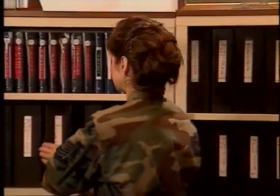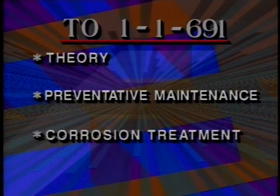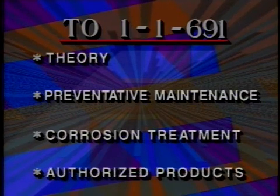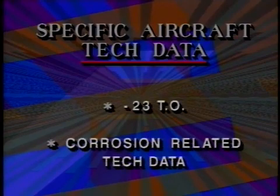If we identify a corrosion problem, how do we find out what the limits are on the damage? Let's start by looking in the applicable tech data. TO 1-1-691 covers general aircraft corrosion, including theory, preventative maintenance, corrosion treatment, and authorized cleaners and solvents. TOs 1-1-689 and 00-25-234 cover avionics-related corrosion concerns. Additionally, the specific aircraft -23 or corrosion-related technical data is available for each type of aircraft.